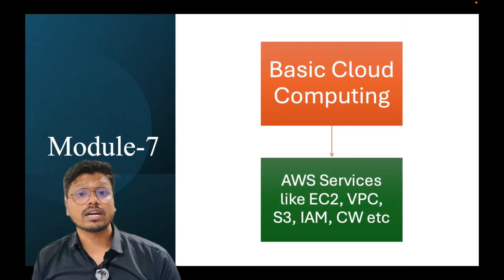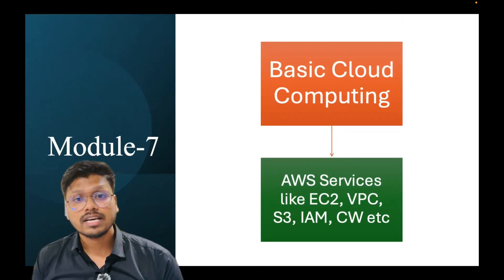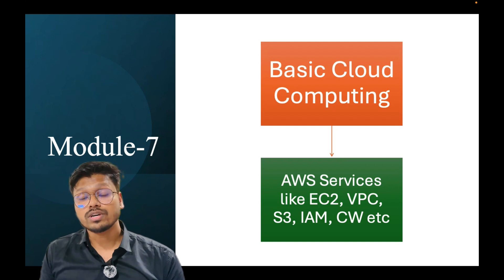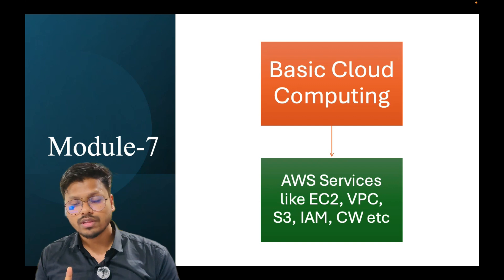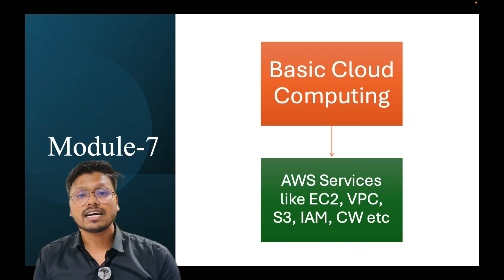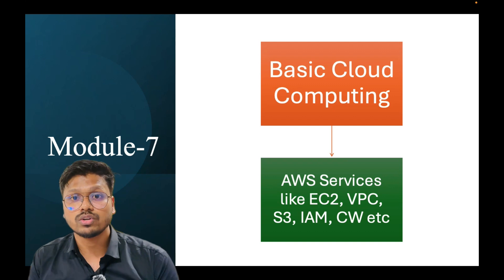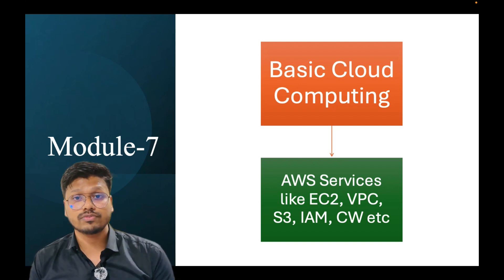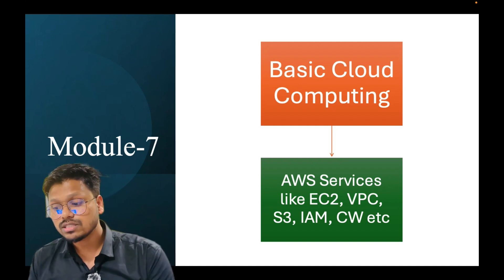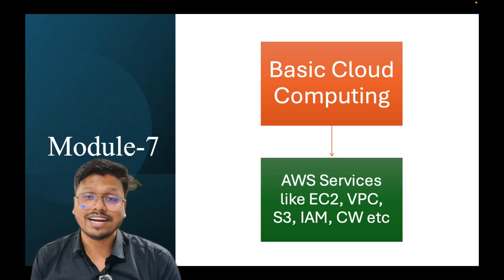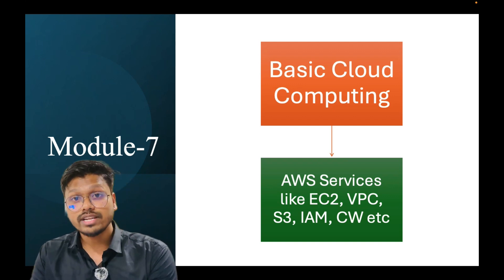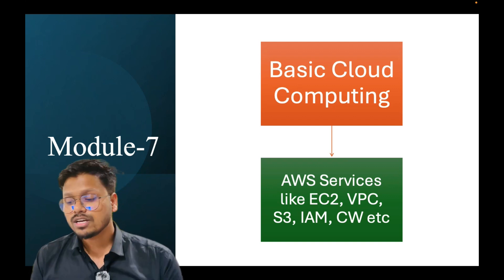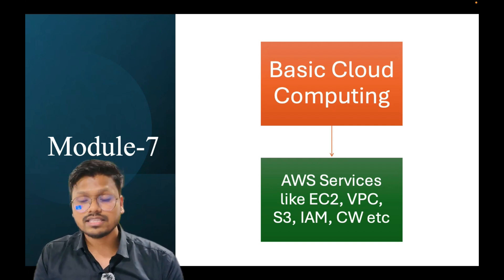Once we are done with Module 6, we'll move ahead to Module 7, where I'll also provide basic cloud understanding dedicated to AWS. There are a few services you must know if you are attending the Cloud Support Associate role, so we will have a discussion on EC2, VPC, S3, IAM, and CloudWatch. If you already know AWS, that's fine; if you don't, these topics will give you more idea and help you correlate with these services when answering interview questions.